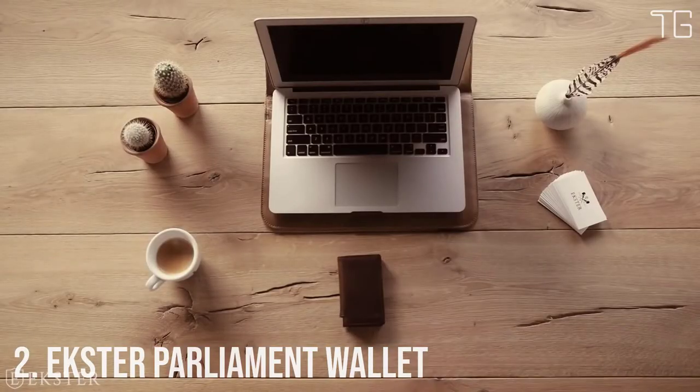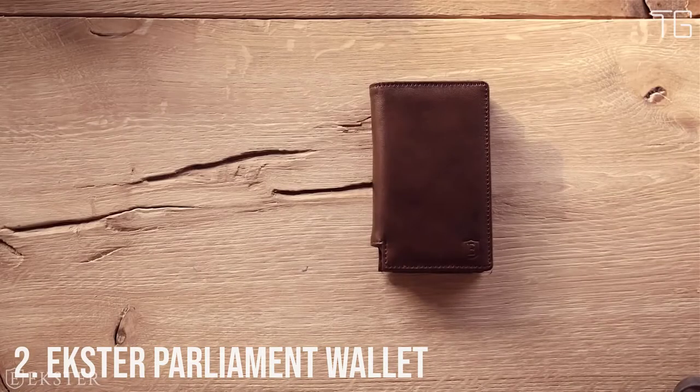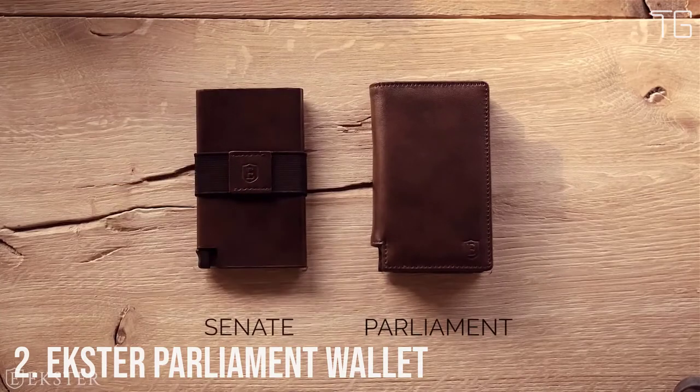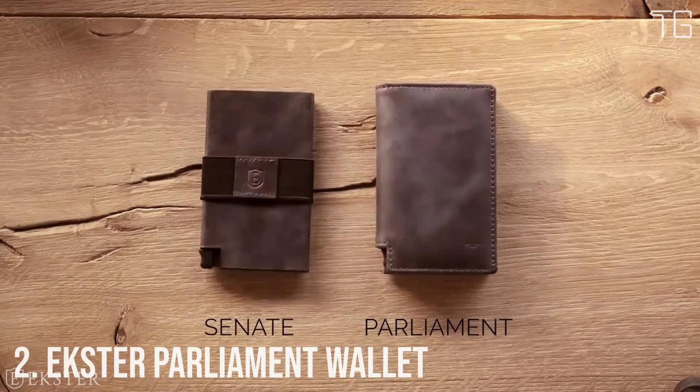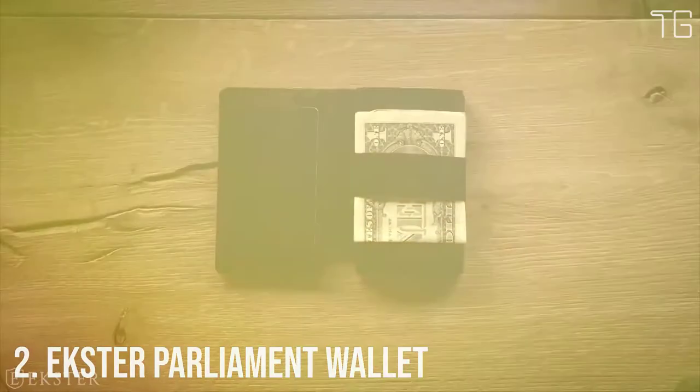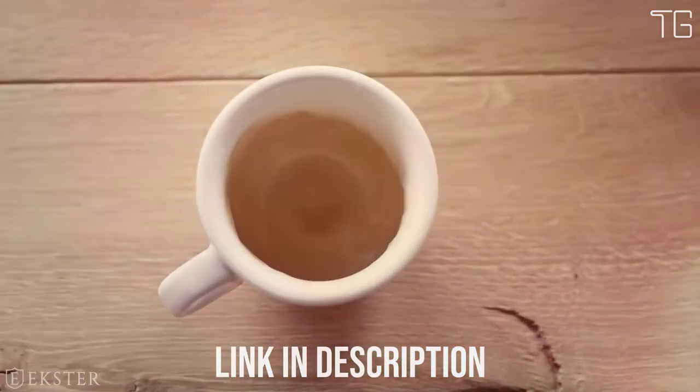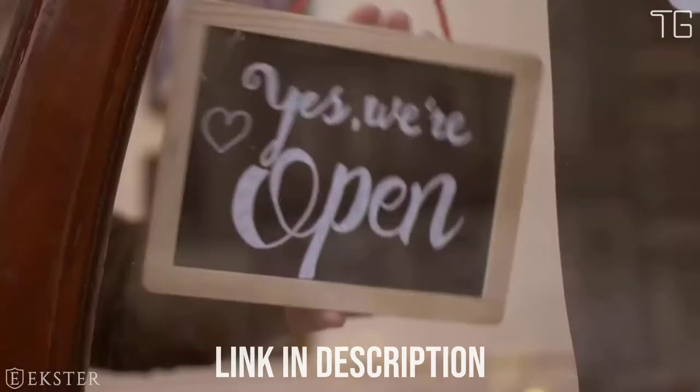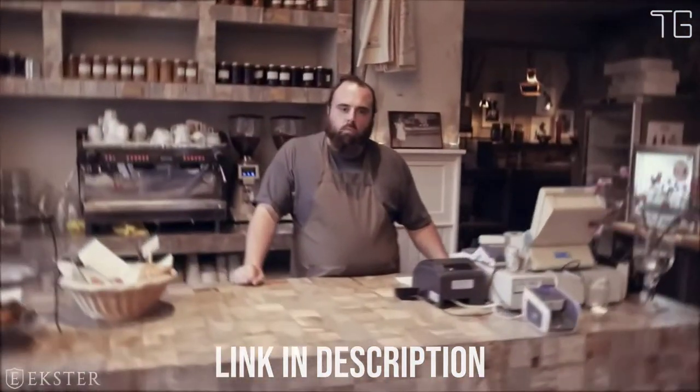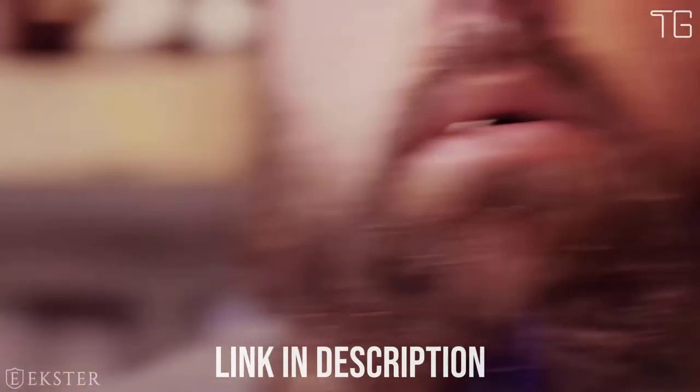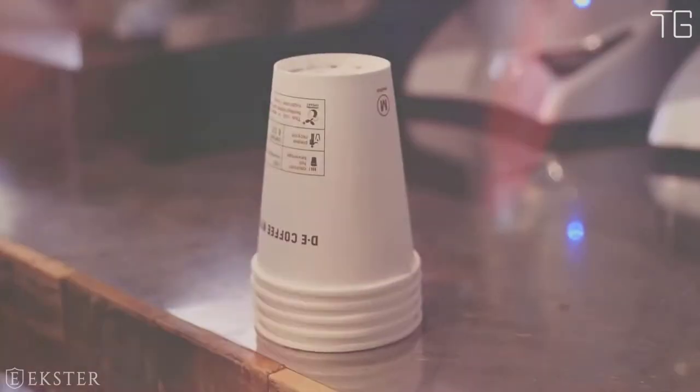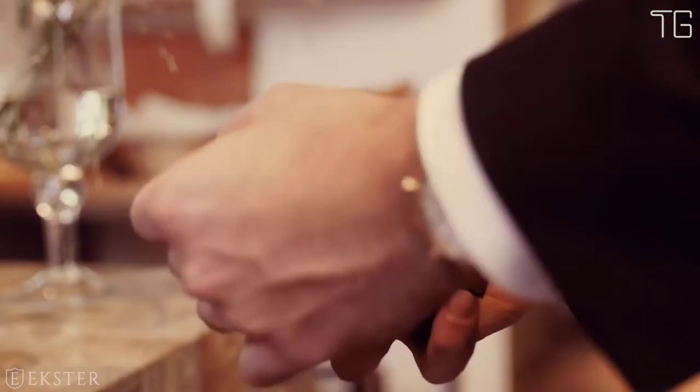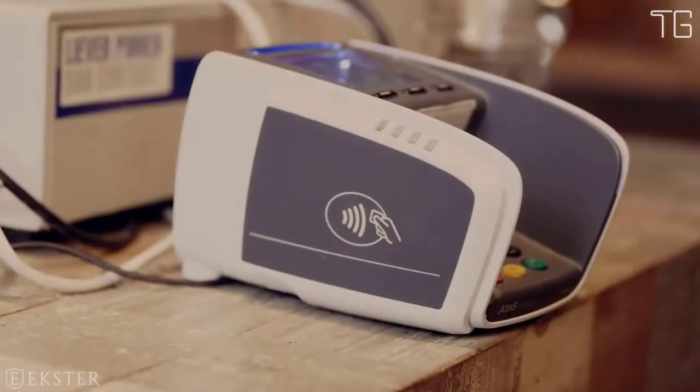Number 2. Exter Parliament Wallet. The Parliament is a leather smart wallet, perfect for slim storage and quick card access. The built-in aluminum cardholder fans out your cards at the click of a button and protects them against skimming.